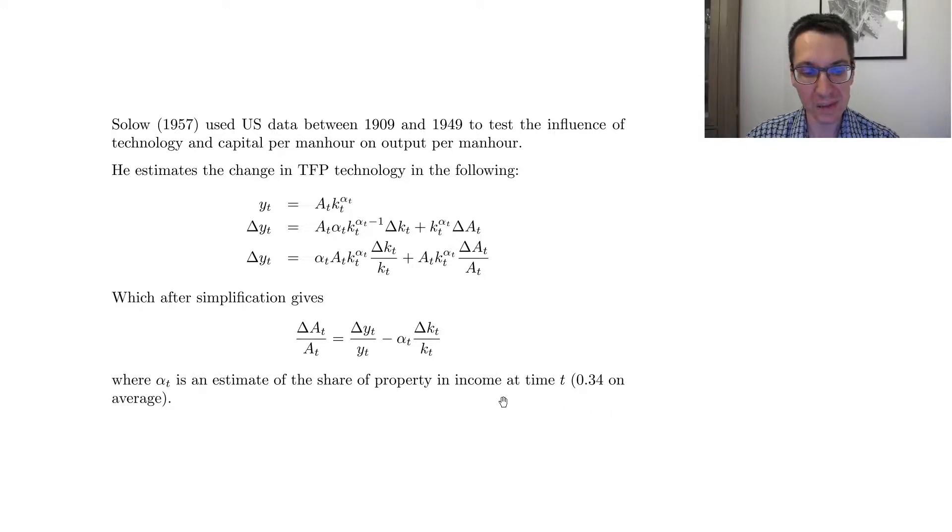And then what we can do is imagine that the technology level is 1 in 1909, and then to get the technology in 1910, then it's 1 plus the growth rate in 1910, and then on and on and on, you can find out what is the technology at each year. So that's his first step, is to basically compute technologies, technological improvements in each year.